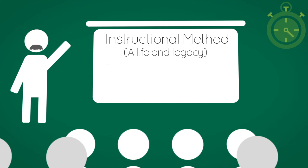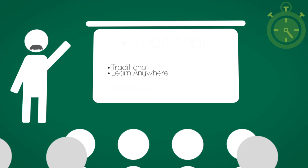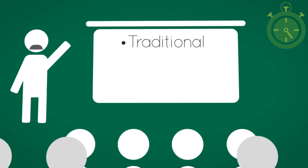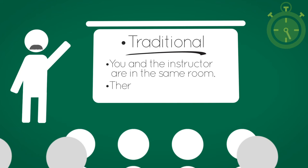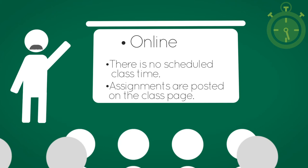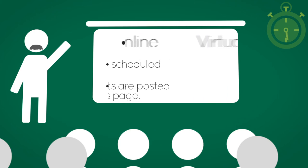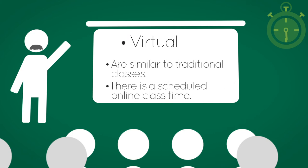The four types of classes you need to know are traditional, online, virtual, and learn anywhere. Traditional classes are what you expect — you're in the same room as the instructor as they teach and there's a scheduled class time. Online classes are where there is no scheduled class time and the instructor posts your assignments on the class page. Virtual classes are like traditional classes, but instead of meeting in the classroom, you meet in an online video call that is set up at a scheduled time.